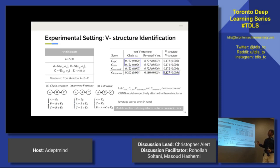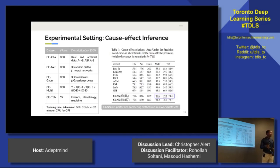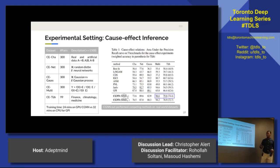It also did pretty well in identifying chain structures. For cause-effect inference, the algorithm was evaluated on five different datasets, drawn from both real-world and artificial examples, with hundreds of pairs of causal relationships. The comparison was made against some constraint-based and score-based methods, placing certain functional form restrictions on causal relationships.